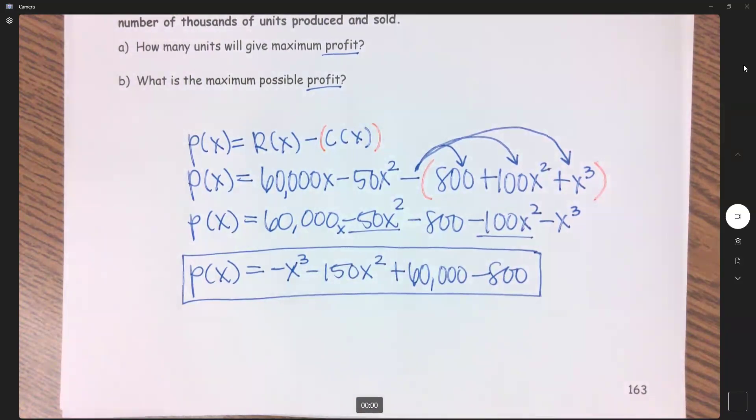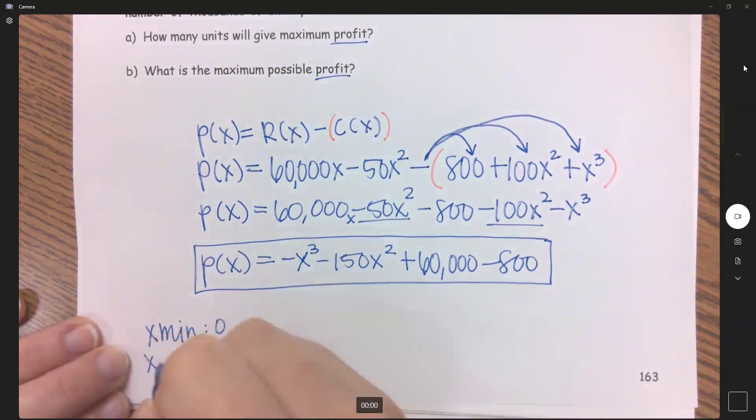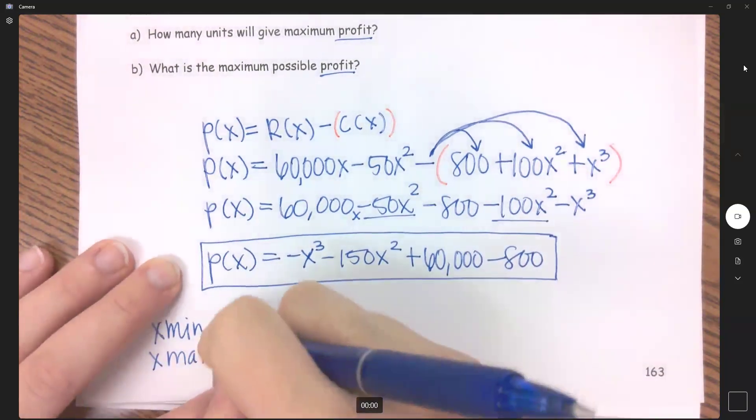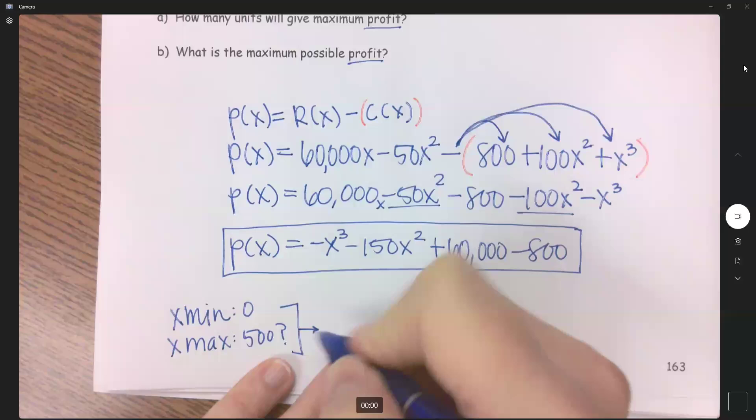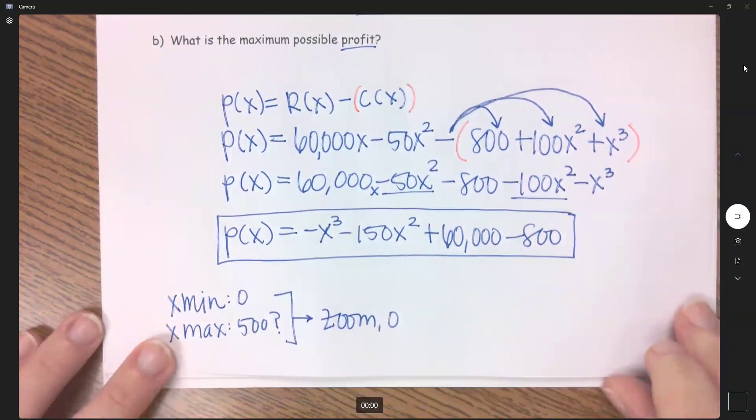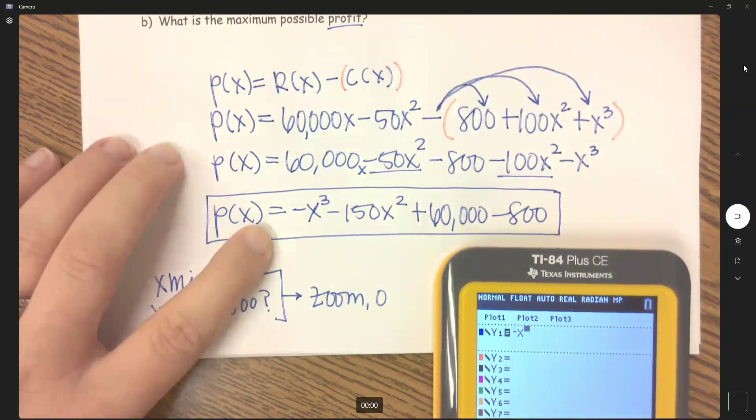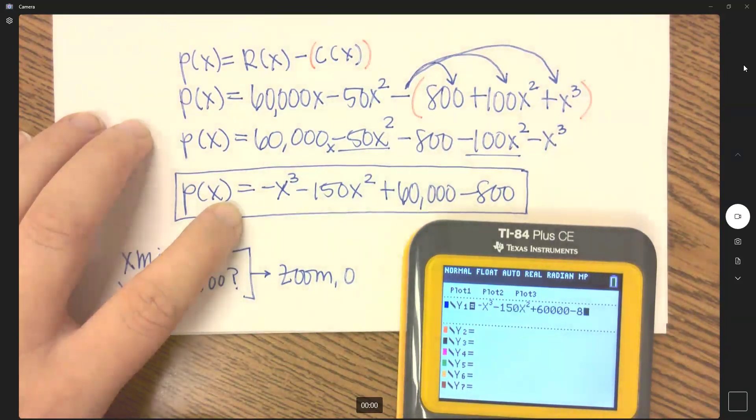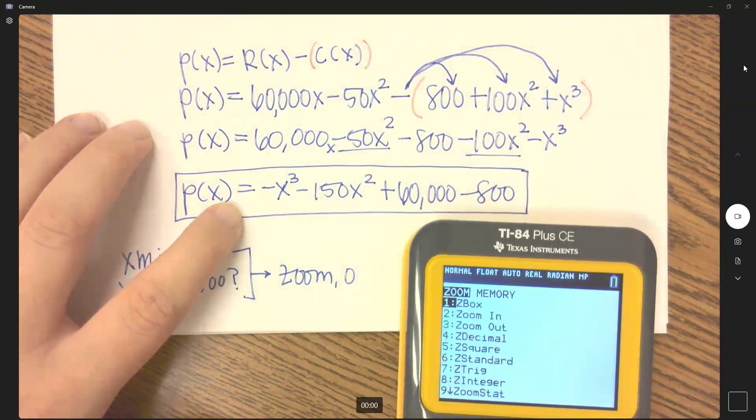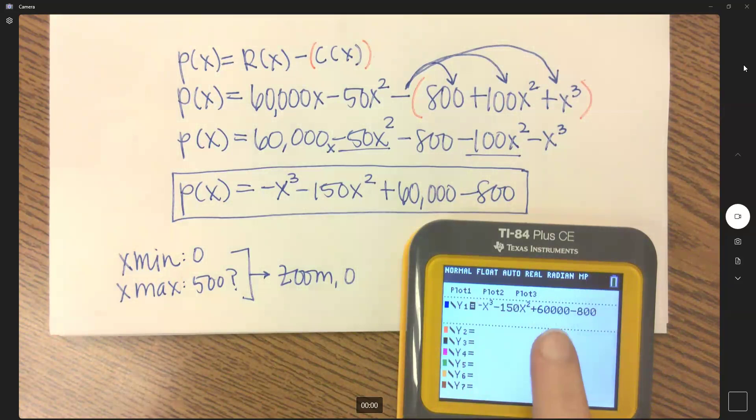Okay, so let's graph this. If we're talking about profit, we're going to start at a y min of 0, and then I want a y max of, we just have to guess again. I'm going to try 500 again. I feel like that's a good starting point. And we'll go zoom 0. That's a horrible graph. Did I type that in right?